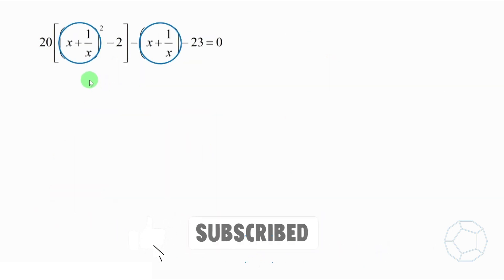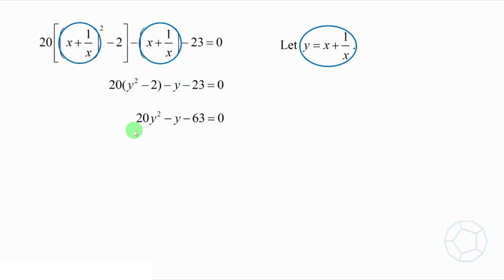If we make a substitution, then the equation can be made even simpler. That's y equals to x plus 1 over x. The equation is changed to 20 times bracket y squared minus 2 minus y minus 23 is equal to 0. Simplified, we get 20y² minus y minus 63 is equal to 0.